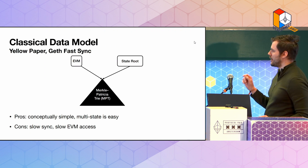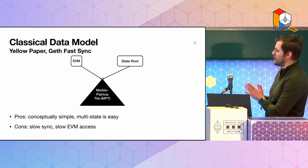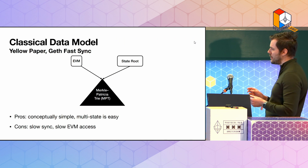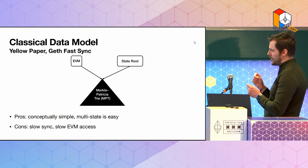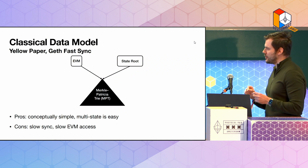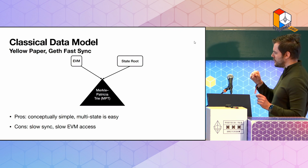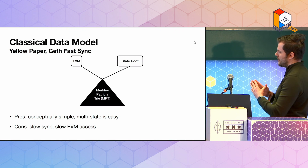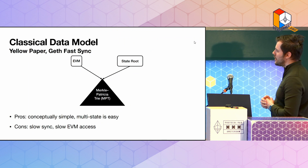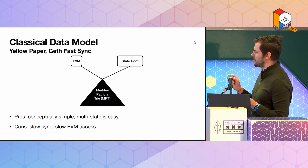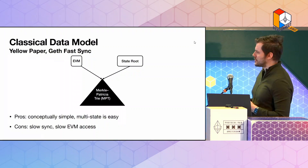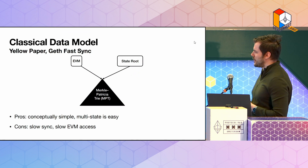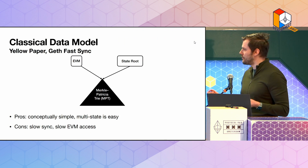Another big advantage is that with the Merkle Patricia Trie it's really easy to evolve it through time. You make some changes with every block, and most of your leaves — being accounts and storage slots — don't change. So the root will change, and a lot of intermediate nodes, but most of the leaves won't. You can combine a lot of tries in one database, giving you a view of multiple states — you can do side chains and more. It's essentially a forest.